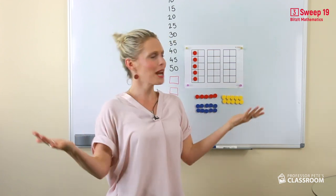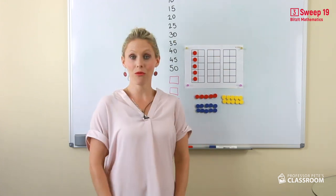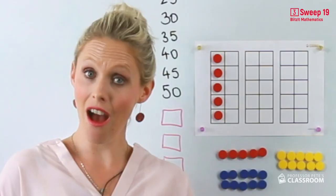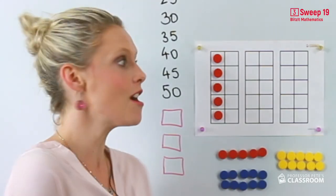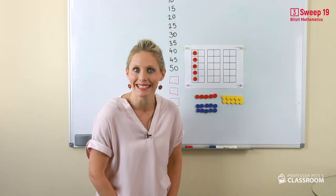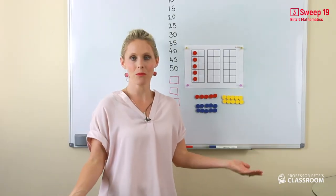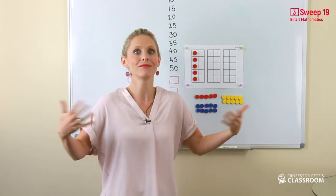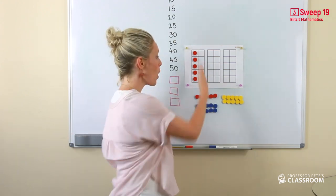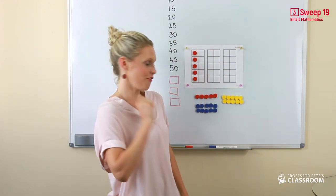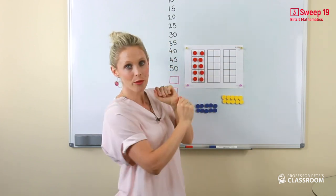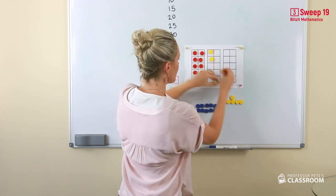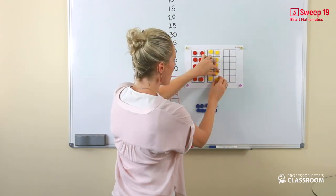Now how do we work it out? Our five times number facts are great because we know that five is half of ten. So each time, two groups of five — or two fives — equal ten. One group of five is five, two groups of five is ten, three groups of five is fifteen, four groups of five is twenty. Can you see?